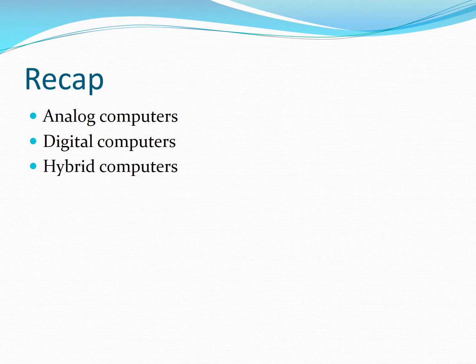First, we recap the previous lesson in which we learned about the analog computer, digital computer, and hybrid computer. In analog computers, we discussed that they work in continuous form and are used for special purposes, mostly in scientific and engineering applications. Then we discussed the digital computer — they work in binary digits 0 and 1.